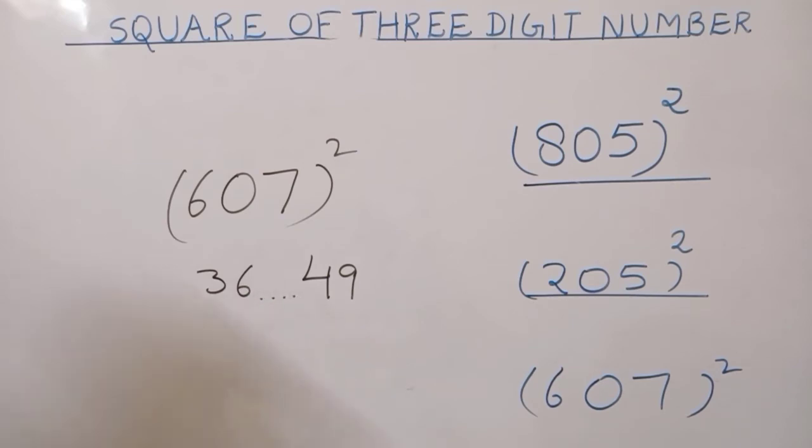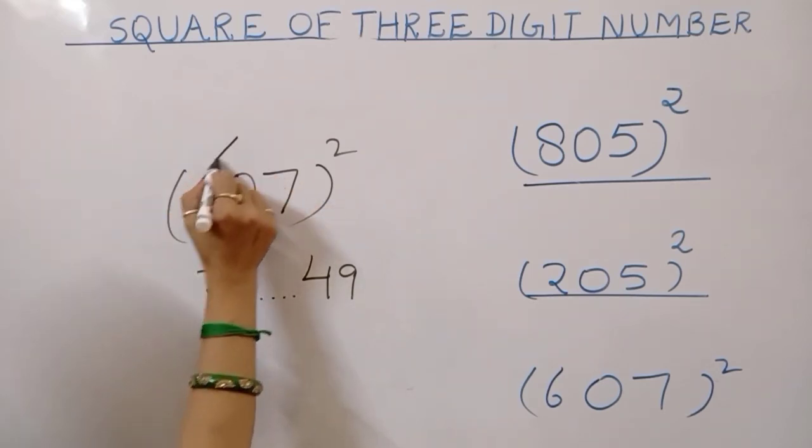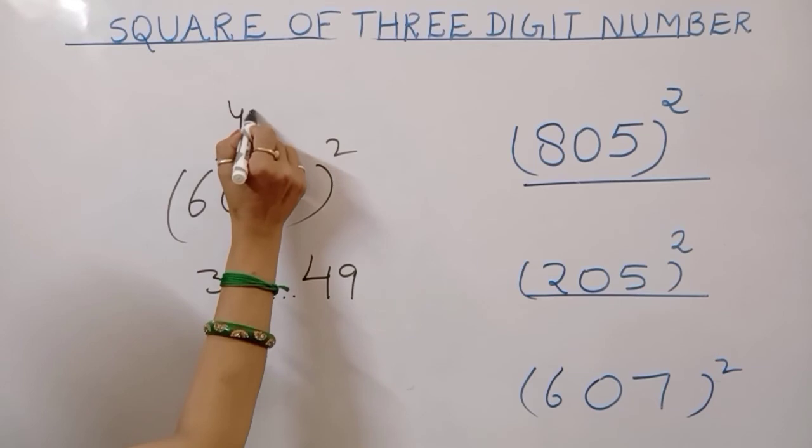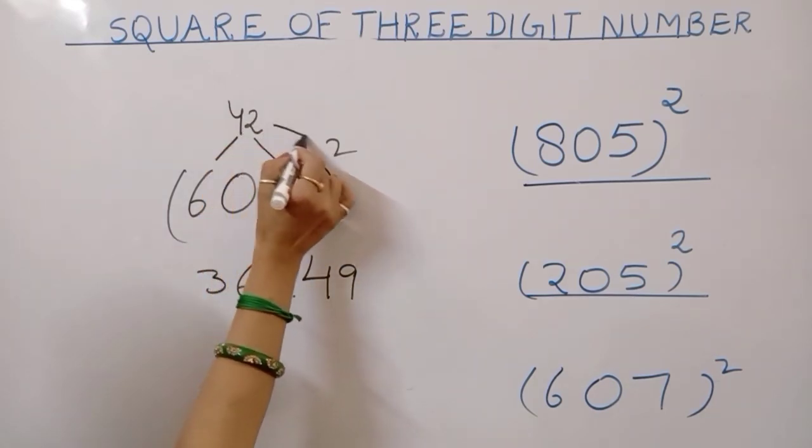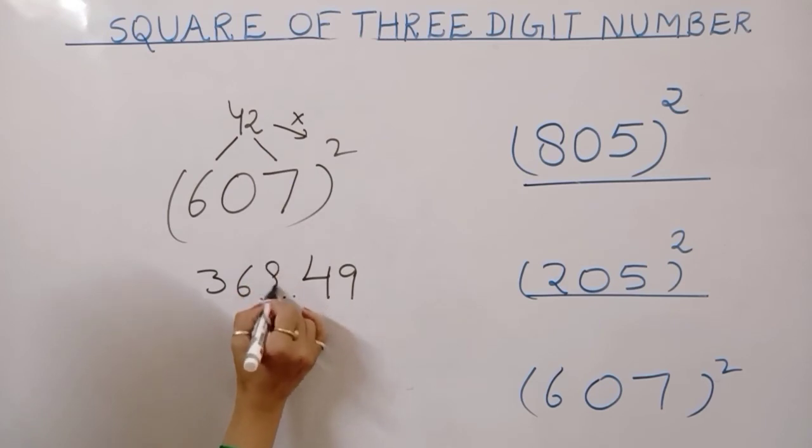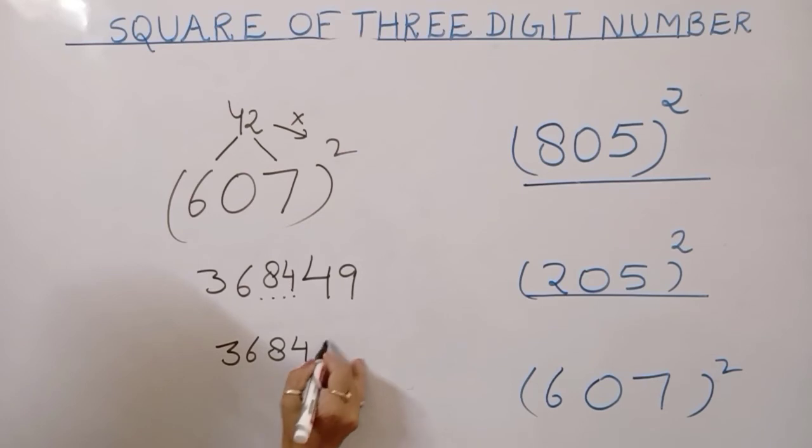Now search for this number. 6 multiply 7, 42. And 42 multiply with this 2, 84. The final answer, 36, 84, and 49. Square of 607.